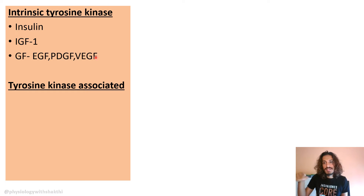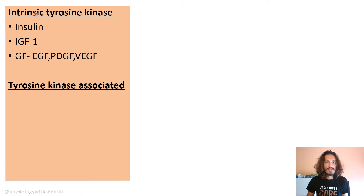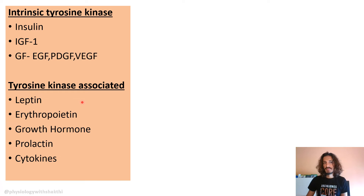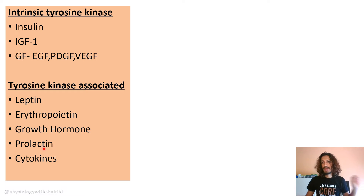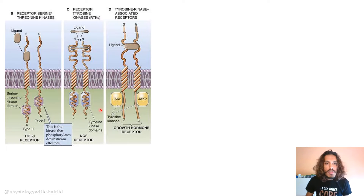A useful memory tip: think of insulin, and from there, insulin growth factors, and from that, all the other growth factors. They all have intrinsic tyrosine kinase activity. Tyrosine kinase-associated receptors are a separate group — anything not in the intrinsic category. These include leptin, which is very important, erythropoietin, growth hormone, prolactin, and cytokines.